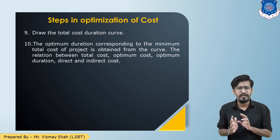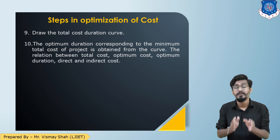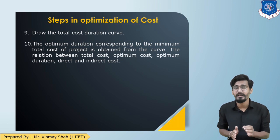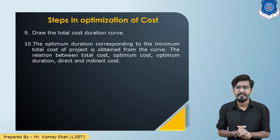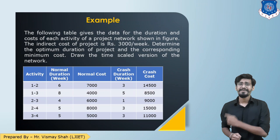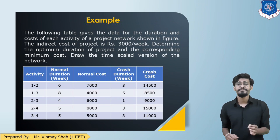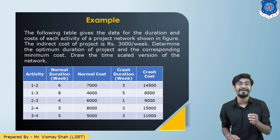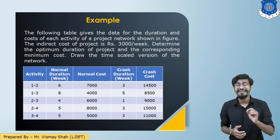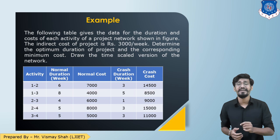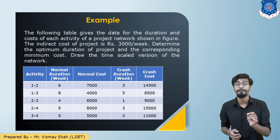Now let us see a numerical. The question gives a table with the duration and cost of each activity in a network diagram. The network is also shown in the figure. The indirect cost associated with the network is 3000 rupees per week.